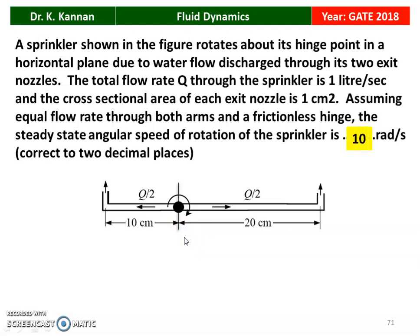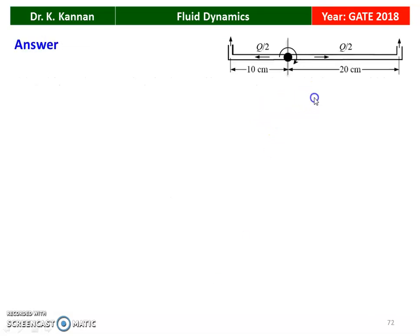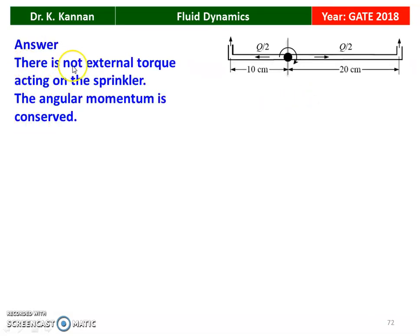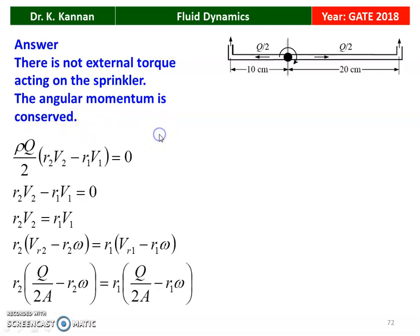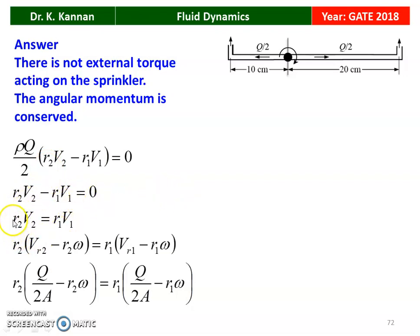The angular speed is 10 radians per second. There is no external torque acting on the sprinkler, so angular momentum is conserved. For conserving angular momentum: R₂V₂ − R₁V₁ = 0, meaning R₂V₂ = R₁V₁.